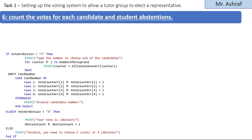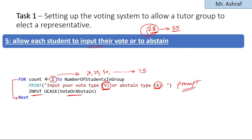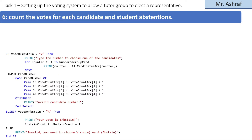At point number six, we count the votes for each candidate and student abstention. Previously we gave the user the choice to type 'v' for voting or 'a' for abstention. If the user selected 'v', this part of the code executes. If 'vote_or_abstain' equals 'a', the abstention branch runs. Anything else shows an invalid message: you need to choose 'v' for vote or 'a' for abstain.